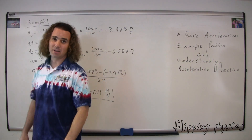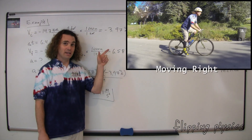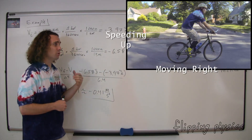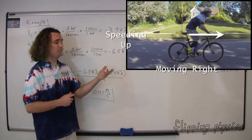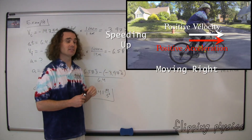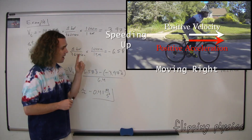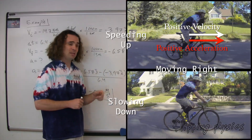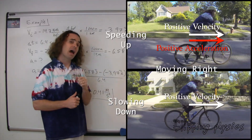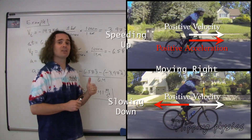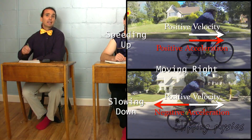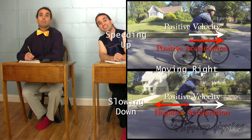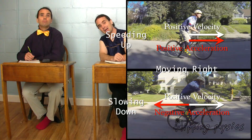Let's say by way of an example that I'm riding my bike to the right and speeding up. In this particular case, my velocity would be to the right, and my acceleration would also be to the right — both would be positive. If instead I'm riding my bike to the right and slowing down, my velocity again is going to be to the right and positive. However, my acceleration is going to be to the left and negative. In other words, when you are speeding up, the acceleration is in the same direction as the velocity, and when you're slowing down, the velocity and acceleration are in opposite directions.